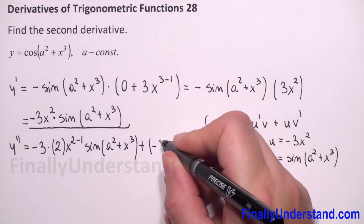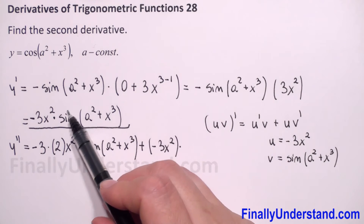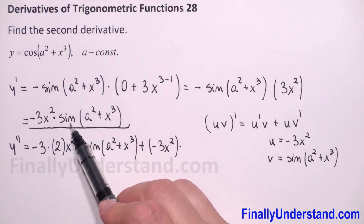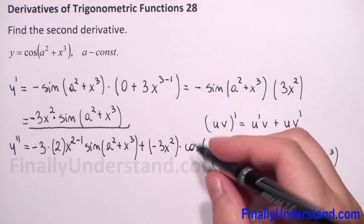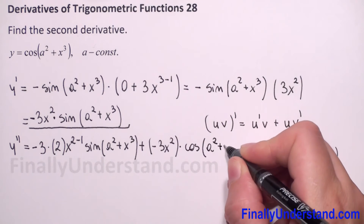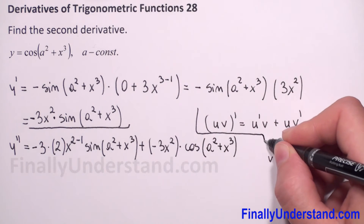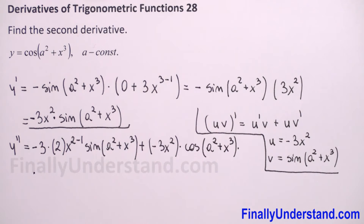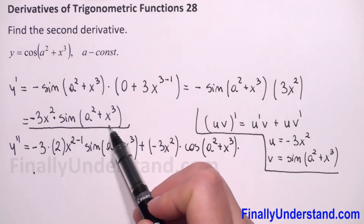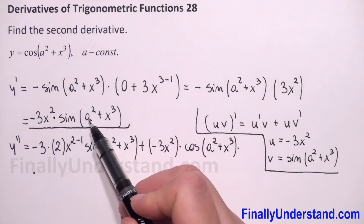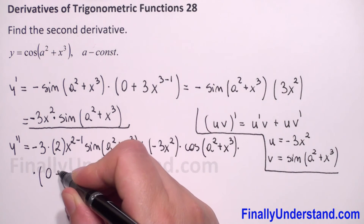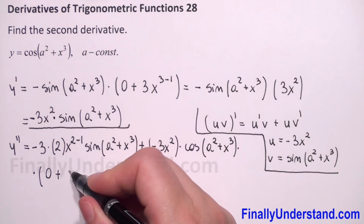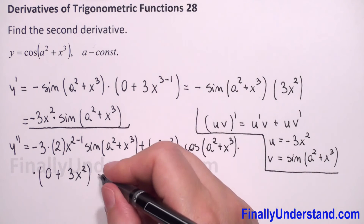Plus we copy the first expression, negative 3x squared, times the derivative of our second expression. We have a composite function again: the derivative of sine is cosine, and we copy whatever is in parenthesis — a squared plus x to the third power — then multiply by the derivative of the inside. a squared is constant so its derivative is zero, plus the derivative of x to the third power, which is 3x squared.